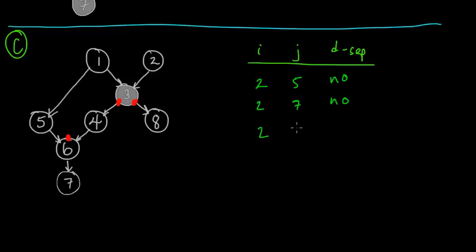Let's do a couple more. How about 2 and 4? We can try path 2, 3, 1, 5, 6 — but we can't go back up to 4 because we're blocked at the head-to-head. The path 2, 3, 4 is also blocked. So that is d-separated. All the paths were blocked: 2, 3, 4 was blocked, and 2, 3, 1, 5, 6, 4 was blocked at 6.